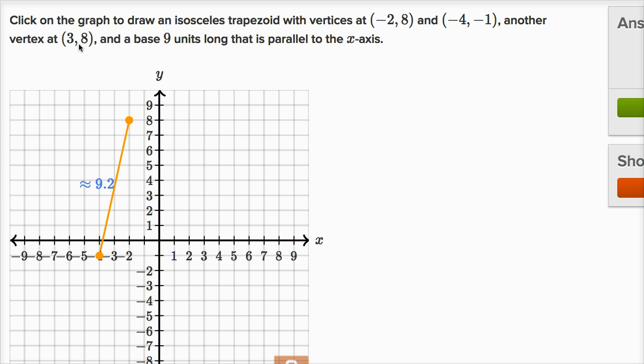And then they say three comma eight. So three comma eight is gonna be right up here. Now I think when I click it, it's gonna try to draw a line between this point and this point, which isn't what we want. If this is a trapezoid, an isosceles trapezoid, I would actually wanna connect three comma eight to this point right over here, to negative two comma eight.